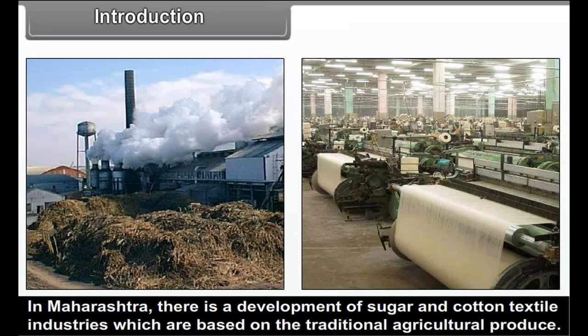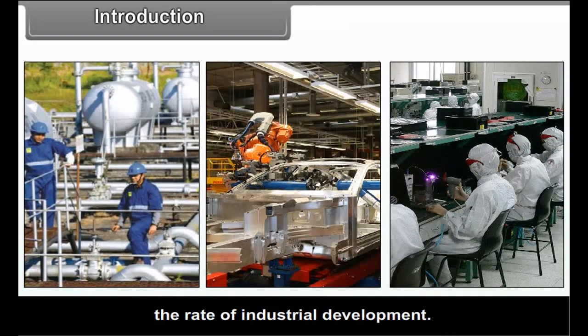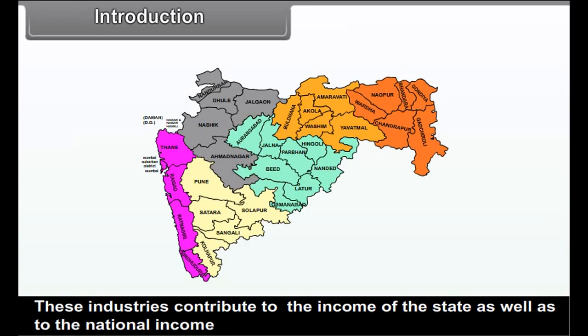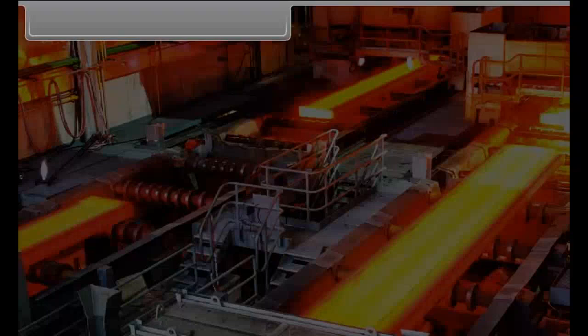In Maharashtra, there is development of sugar and cotton textile industries which are based on traditional agricultural produce. Also, the growth of chemical industries, automobile industries and electronic industries have accelerated the rate of industrial development. These industries contribute to the income of the state as well as to the national income, and provide employment to the people of the state.